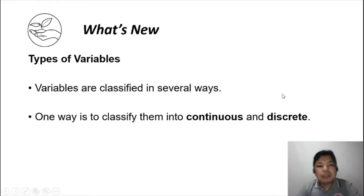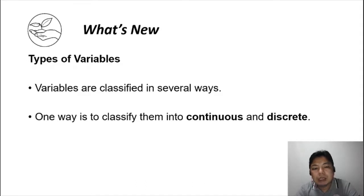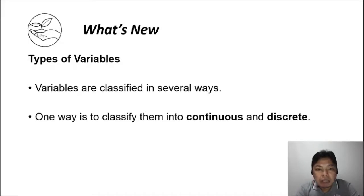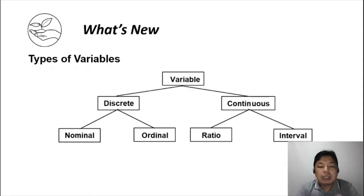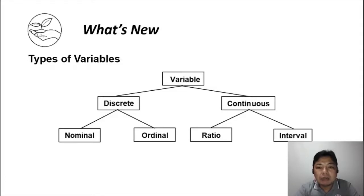Now let's talk about the different types of variables. Variables are classified in several ways. One way is into continuous or discrete. When we say continuous, it is measurable; when we say discrete, it is countable. Variables are classified into two: discrete and continuous. Discrete is further classified into nominal and ordinal, and continuous is classified into ratio and interval. We are going to talk about them one by one.